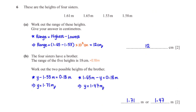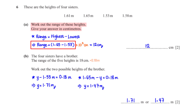These are the heights of four sisters. Work out the range of these heights and give your answer in centimeters. To get the range we simply subtract the lowest height from the highest height. The highest height is 1.65 meters and the lowest is 1.53 meters. To convert this difference to centimeters we multiply by 10 squared, giving us 12 centimeters.